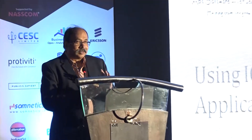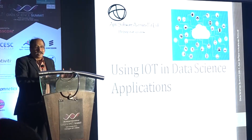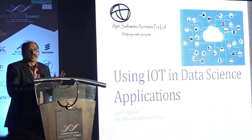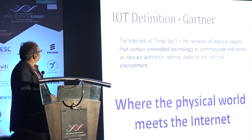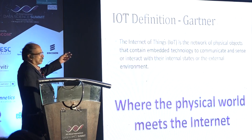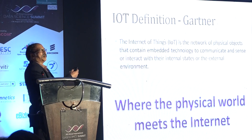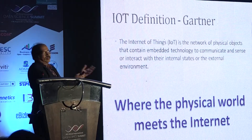Good afternoon everybody. I'll just get started as we are running late. I'm going to talk about a peripheral aspect of data science — specifically, if you want to use IoT to generate data for data science, what do you have to do, what are the challenges, and what are the opportunities? Starting with a quick definition: Gartner's definition is a network of physical objects that contain some embedded technology to communicate and sense with the physical world and interact with the environment.